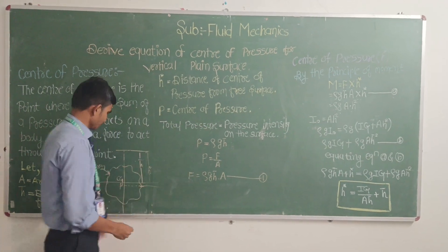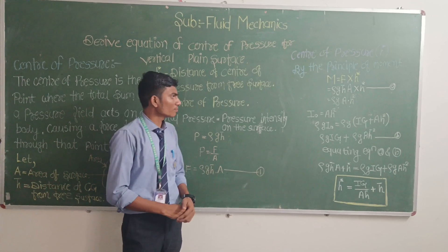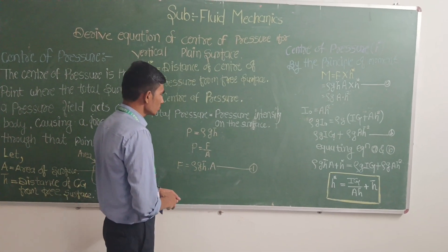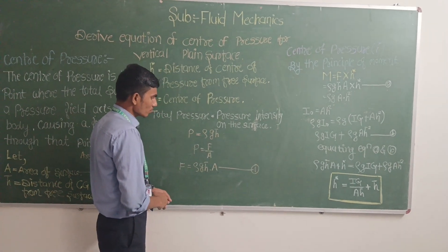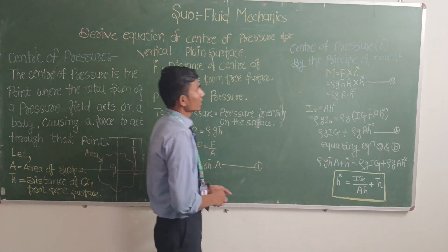P is the center of pressure, total pressure. Total pressure is equal to pressure intensity on the surface. P is equal to W into G into H-bar, P is equal to A into H-bar.